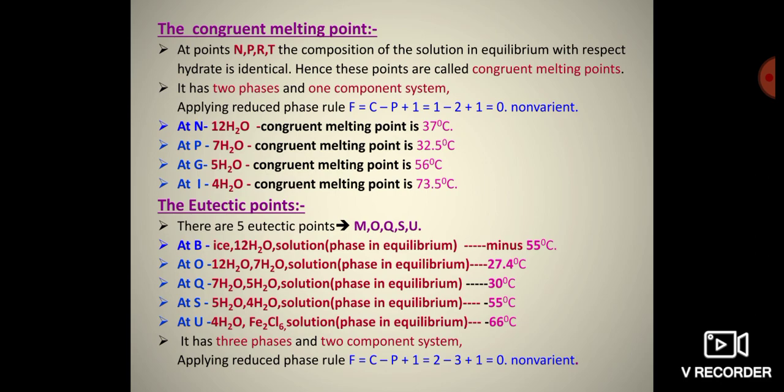At O, the three phases are Fe₂Cl₆·12H₂O, Fe₂Cl₆·7H₂O, and solution, with an eutectic temperature of 27.4°C. At Q, the phases are Fe₂Cl₆·7H₂O, Fe₂Cl₆·5H₂O, and solution, with an eutectic temperature of 30°C.